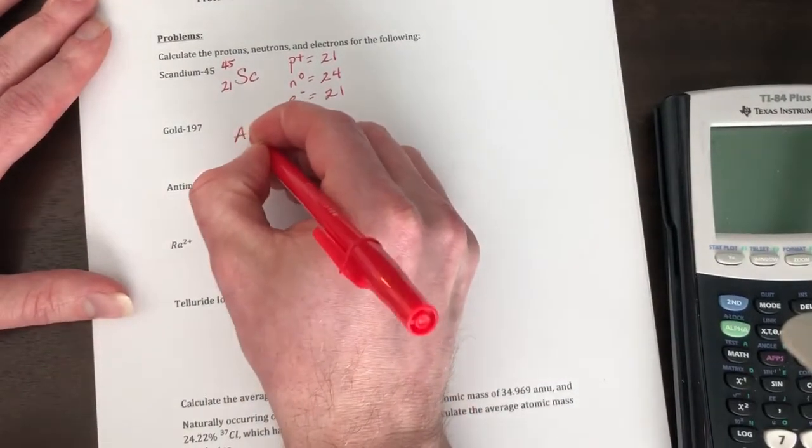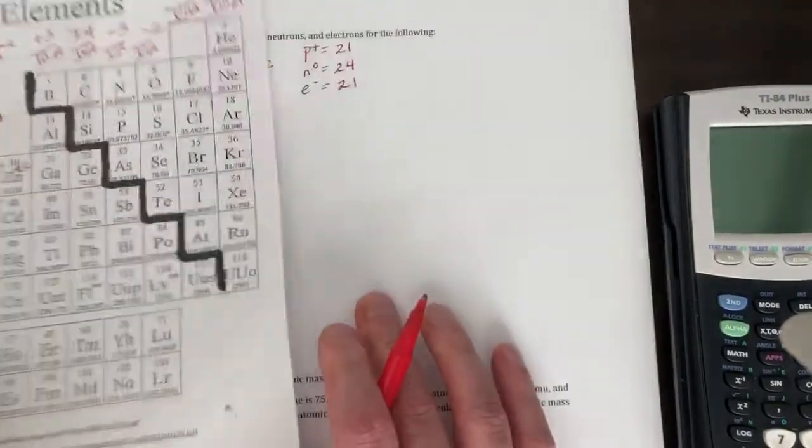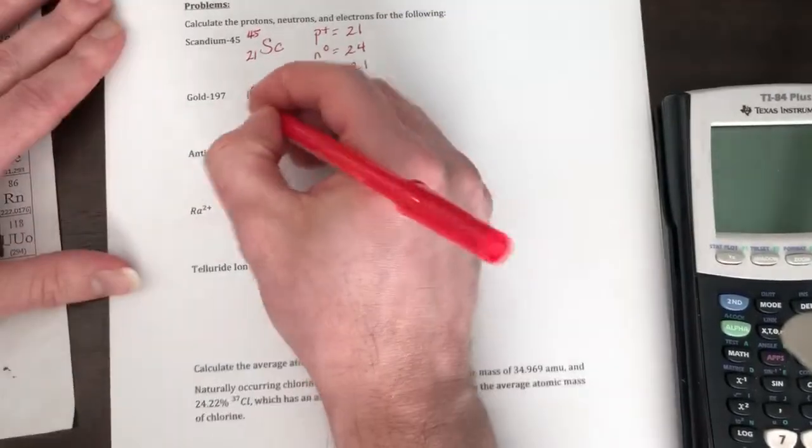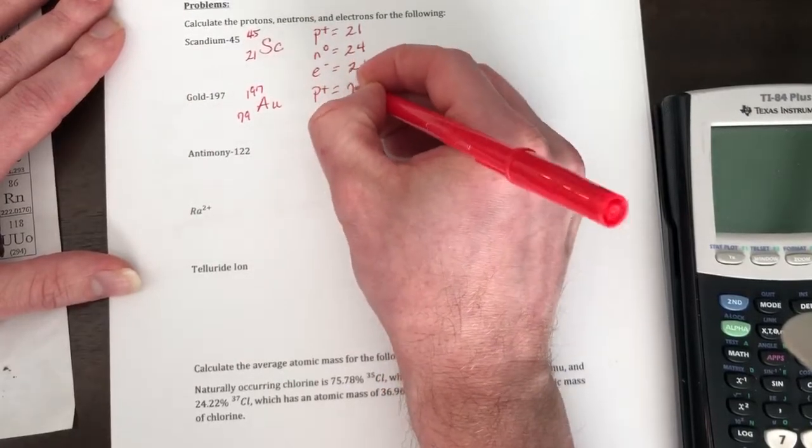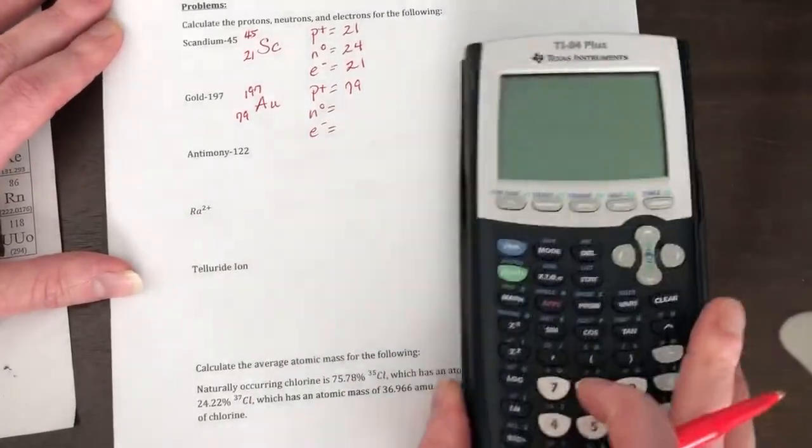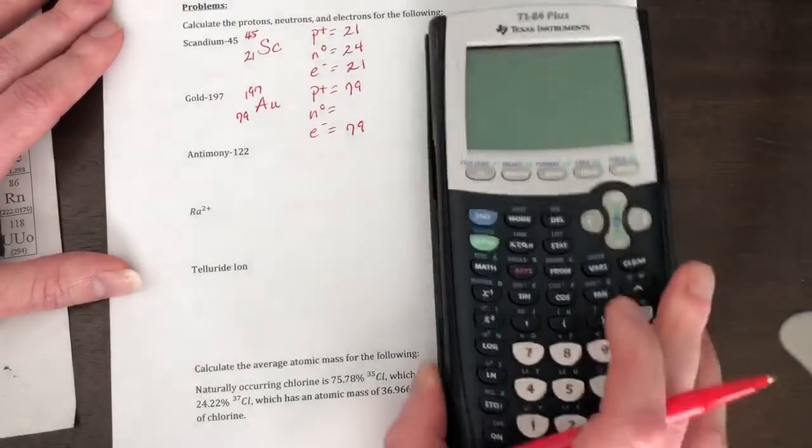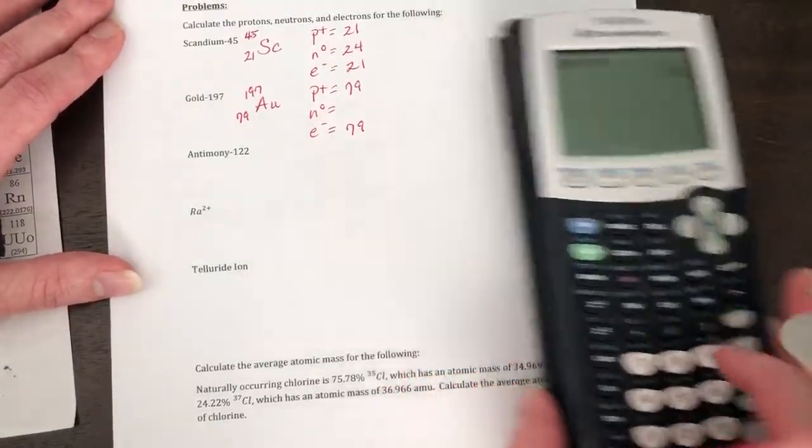Gold, symbol for gold is AU. It gives us the mass is 197. So gold has an atomic number of 79. So your protons are 79, your electrons are also gonna be 79. Your neutrons are gonna be 197 minus 79, which is 118.